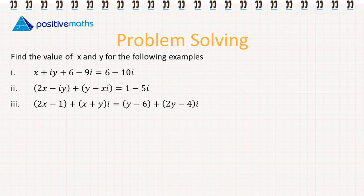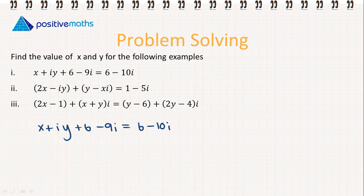So let's look at some examples. We need to find the value of x and y for the following. The first question: we have x plus iy plus 6 minus 9i is equal to 6 minus 10i. We can deal with the real parts and the imaginary parts separately. The real parts give us x plus 6 equals 6, therefore x is equal to 0.